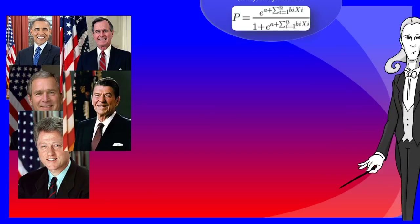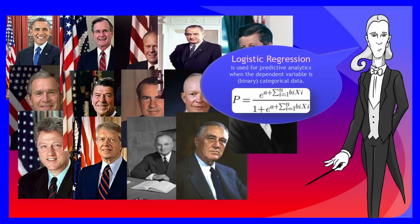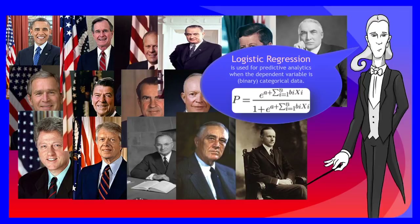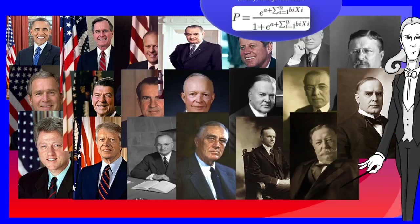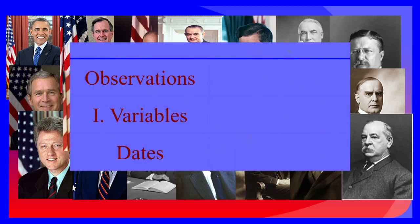In this video, we will use a logistic regression model to determine if a given state will vote Democrat or Republican, with success defined as a vote for the incumbent political party. The model will be built on historical electoral college results from the previous 30 election cycles, a data set containing over 1,200 observations of 24 potential independent variables going back over 120 years.